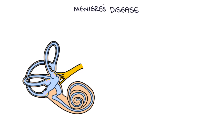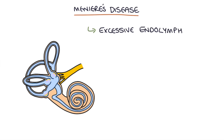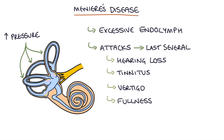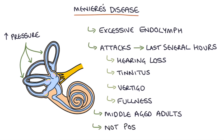Meniere's disease is thought to be caused by an excessive buildup of endolymph in the semicircular canals, causing higher pressure than normal which disrupts the sensory signals. It causes attacks of hearing loss, tinnitus, vertigo and a sensation of fullness in the ear. These attacks typically last several hours and often occur in middle-aged adults. It is not associated with movement, so the symptoms are not positional. Patients will have spontaneous nystagmus during the attacks where their eyes flicker backwards and forwards, and over time the patient's hearing will gradually deteriorate between attacks.